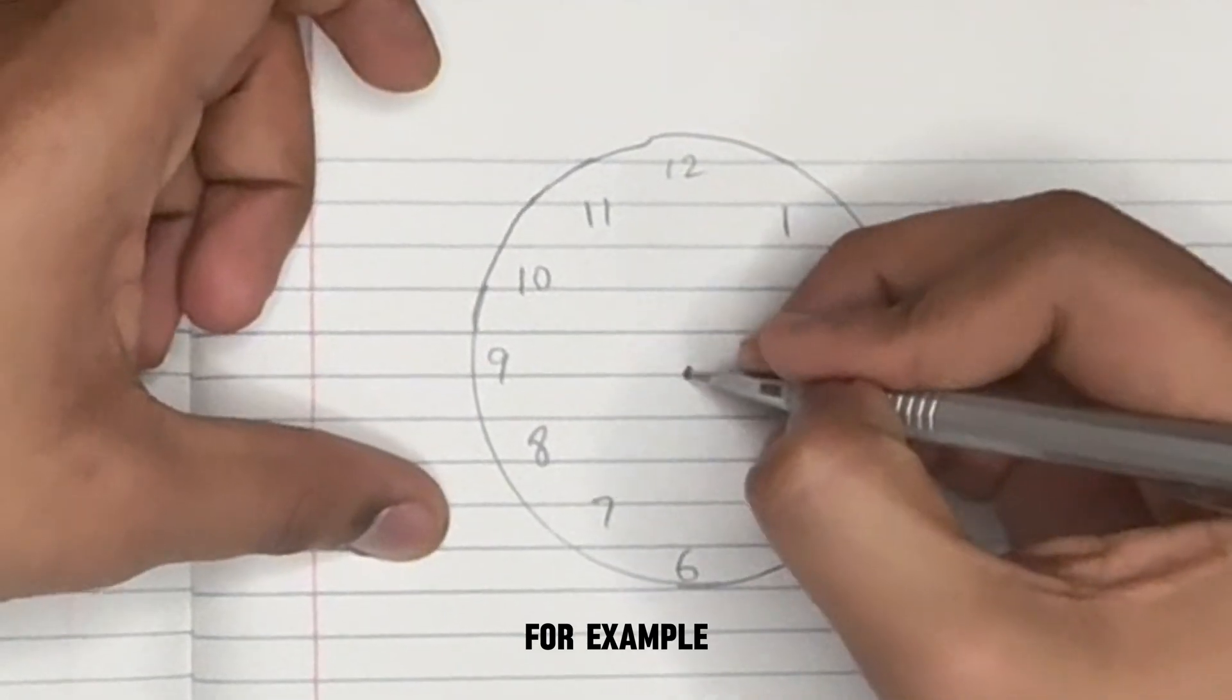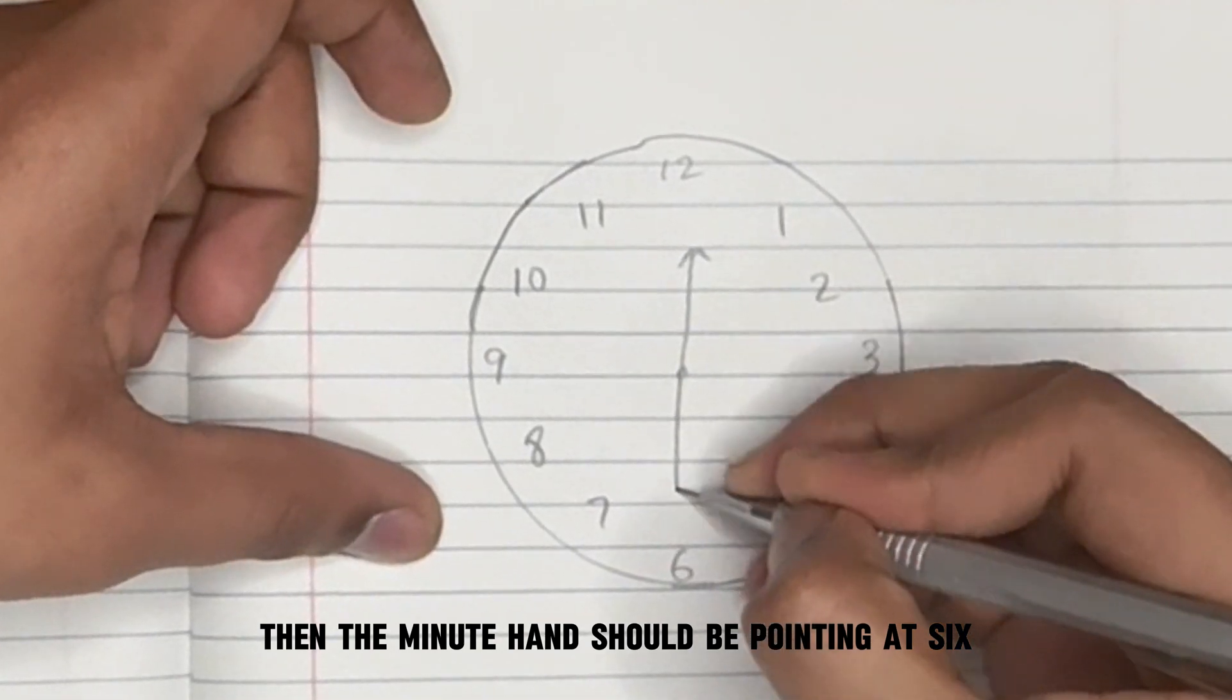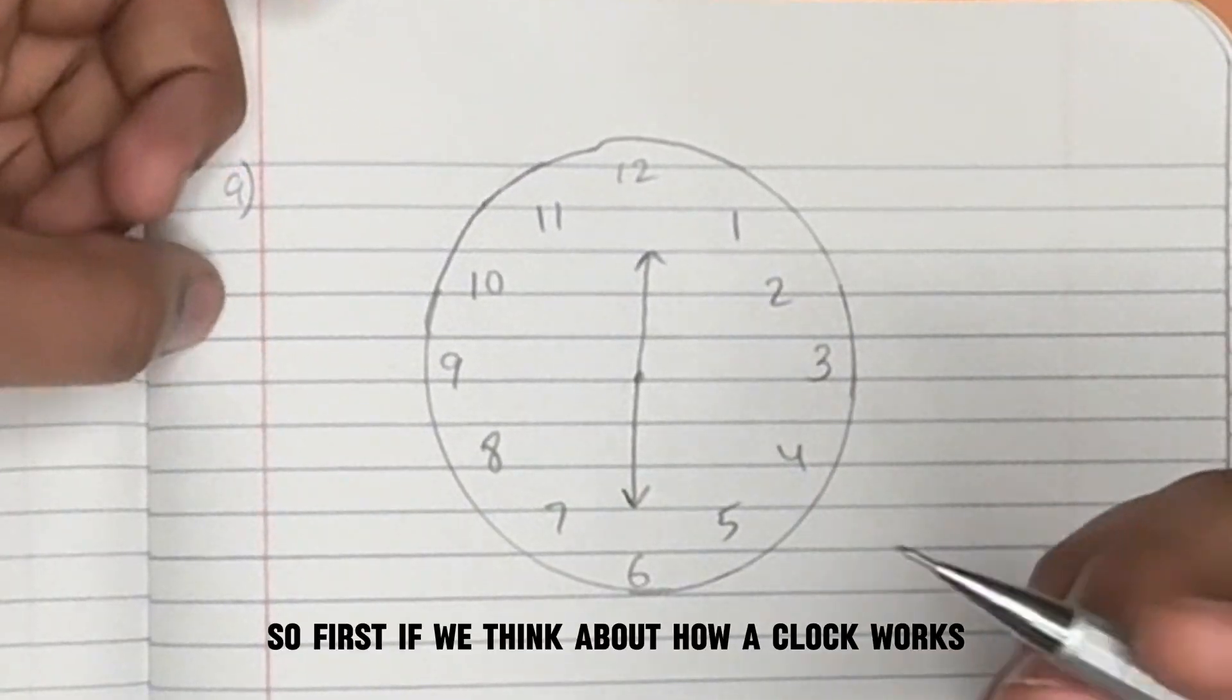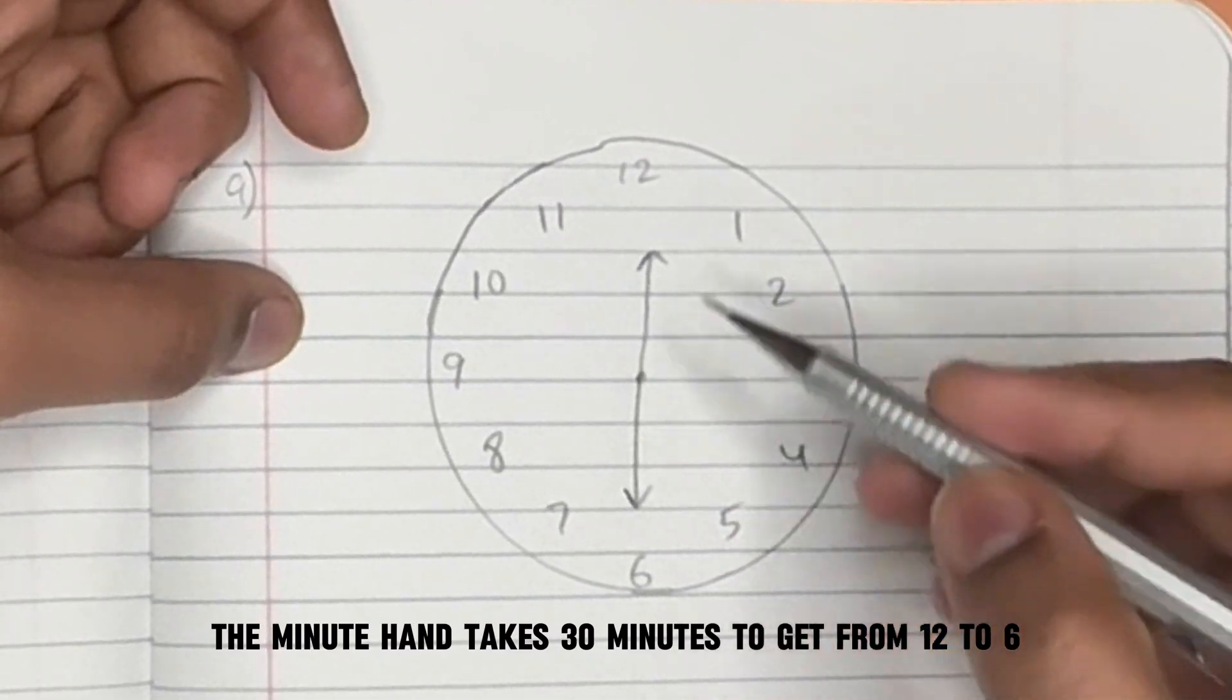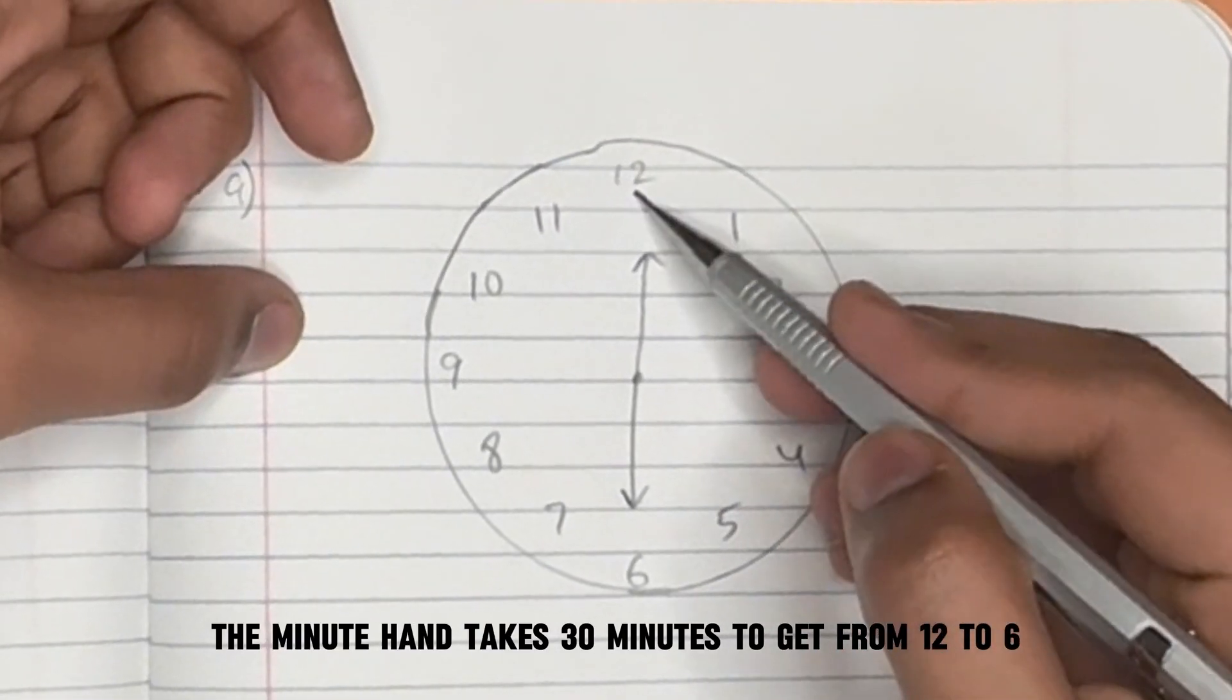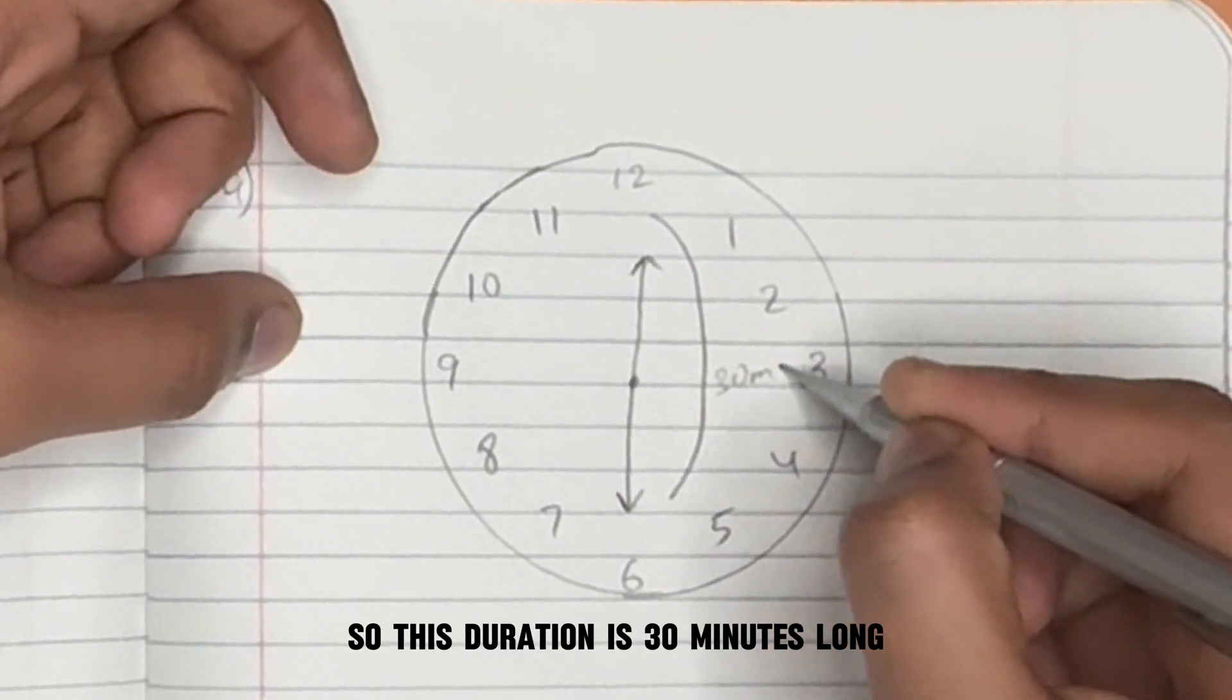For example, if the hour hand is at 12, then the minute hand should be pointing at 6. So first, if we think about how a clock works, the minute hand takes 30 minutes to get from 12 to 6. So this duration is 30 minutes long.